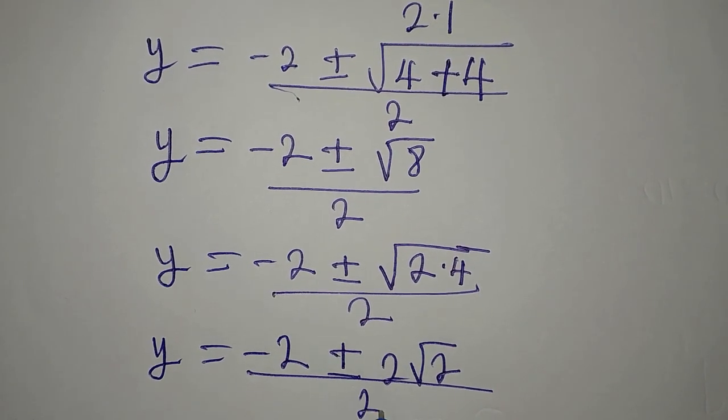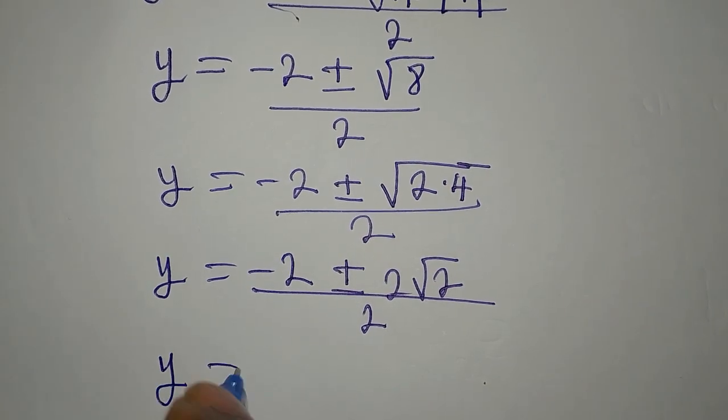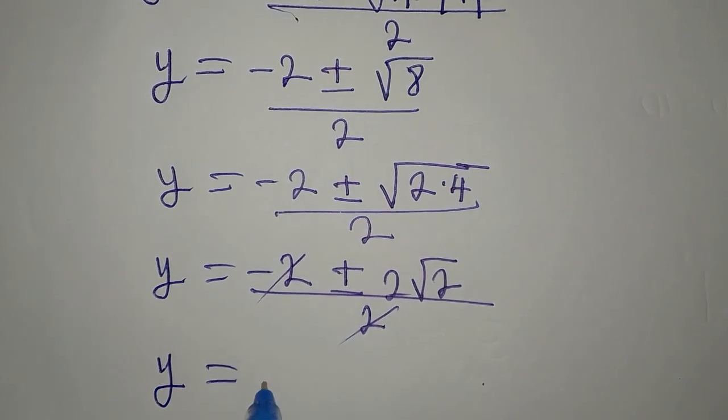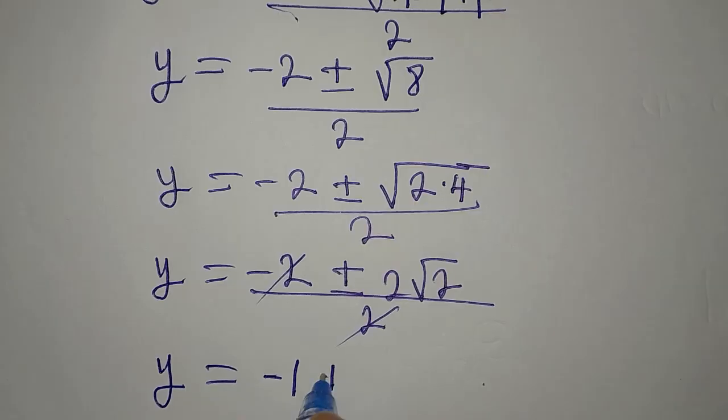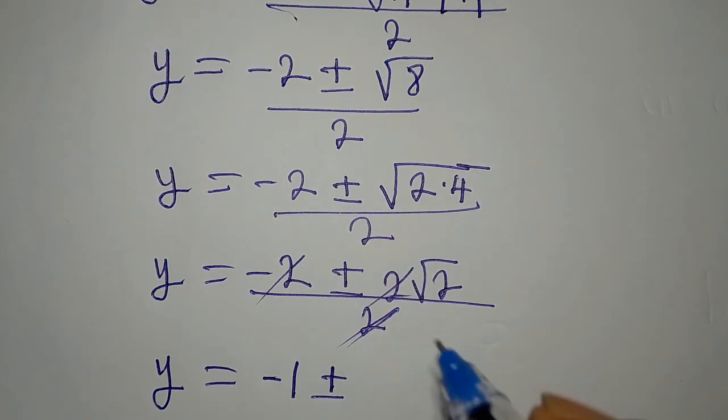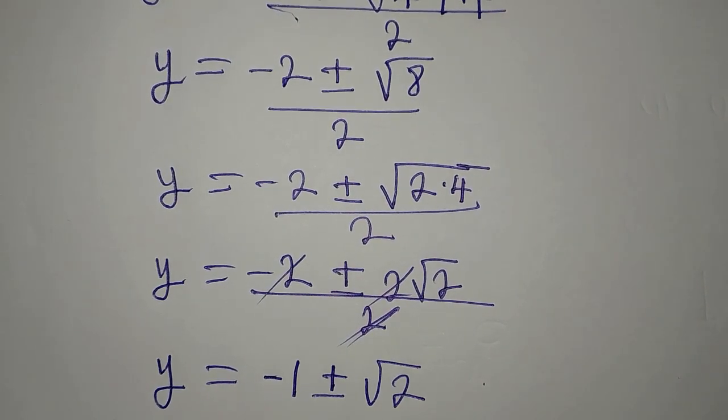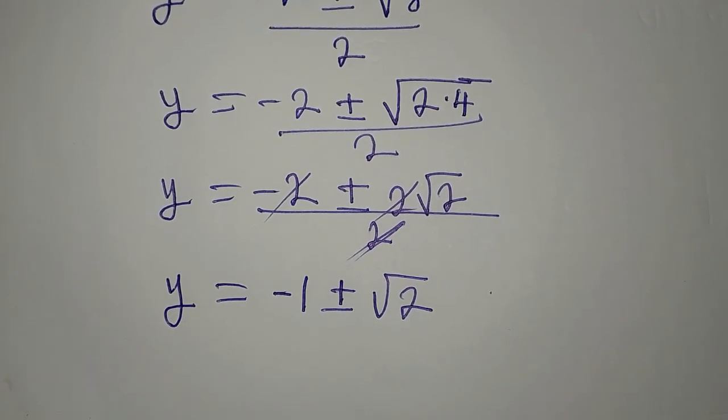Y is minus 2 plus or minus, we have square root of 4 is 2, then let square root 2 follow. This is divided by 2, so y now is 2 can go, we have minus 1 plus or minus, the 2 will go, we have just root 2.